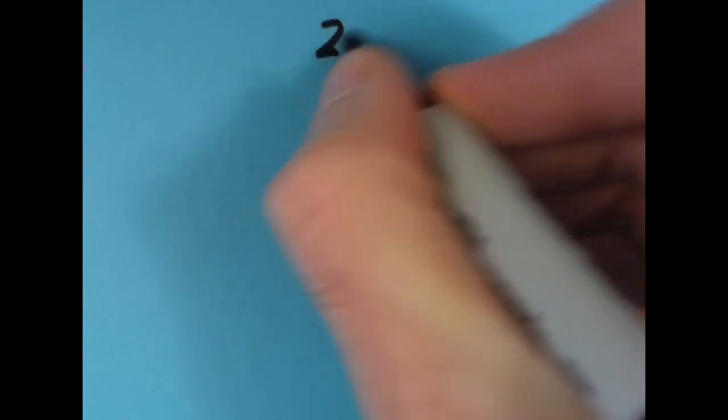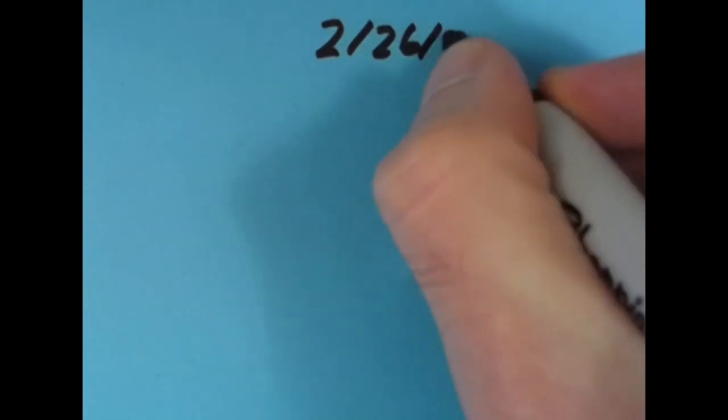Now, tomorrow is going to be February 26th, so we can write the date as 2, 26, 23. So go ahead and see if you can come up with an equation for the digits in this date.